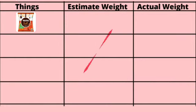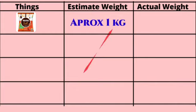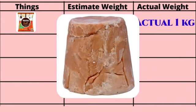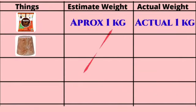First item: weight is one kg. Second item, one big lump of jaggery: the estimated weight is approximately more than one kg, while the actual weight is one kg 500 grams.